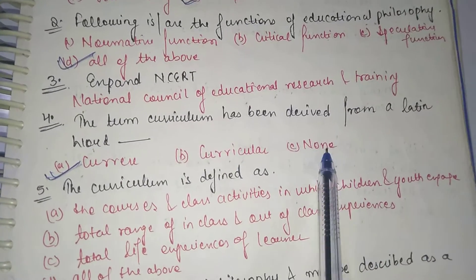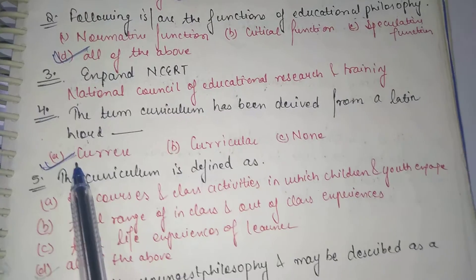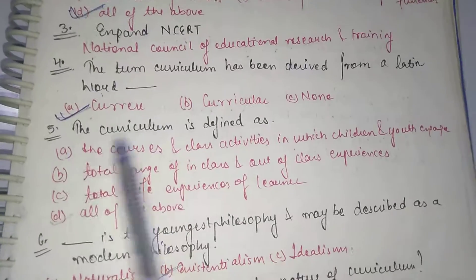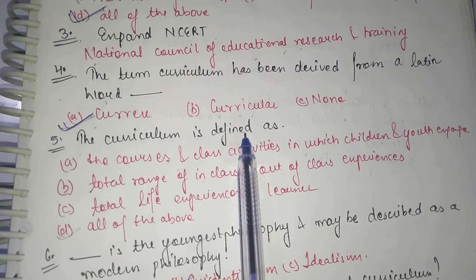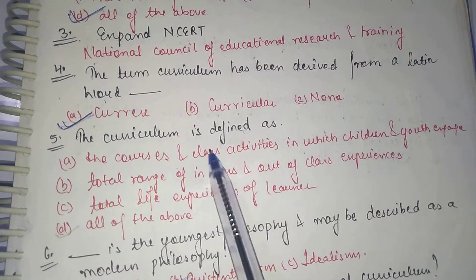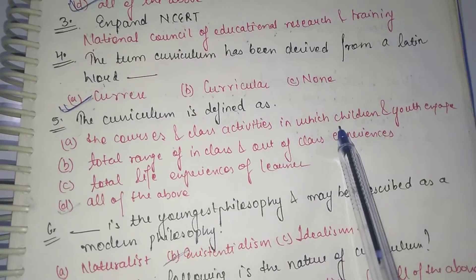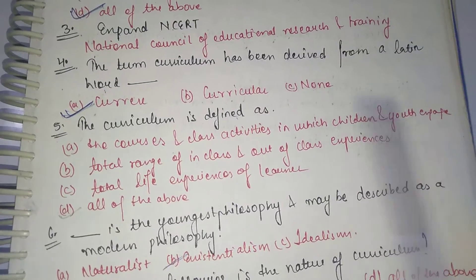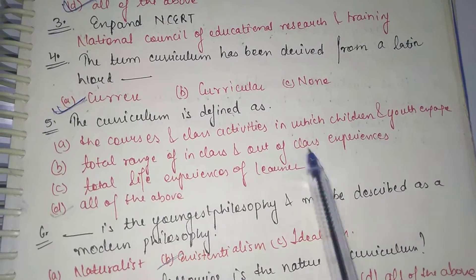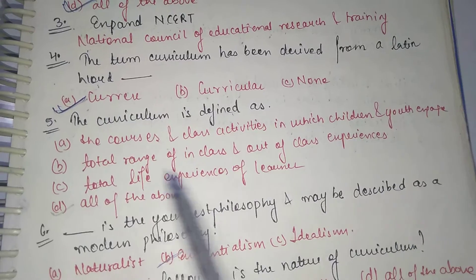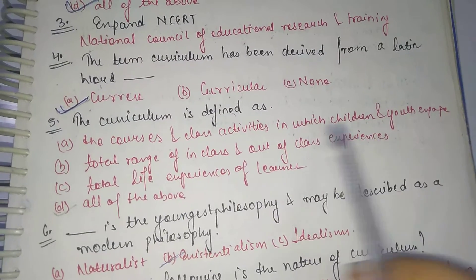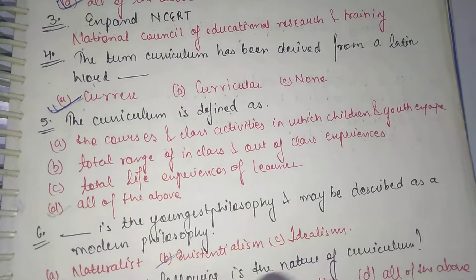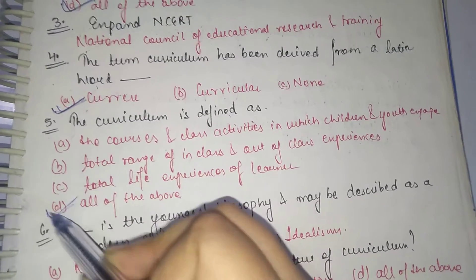The curriculum is defined as: the courses and class activities in which children and youth engage, total range of in-class and out-of-class experiences, total life experiences of learner, or all of the above. So the correct option is Option D, all of the above.